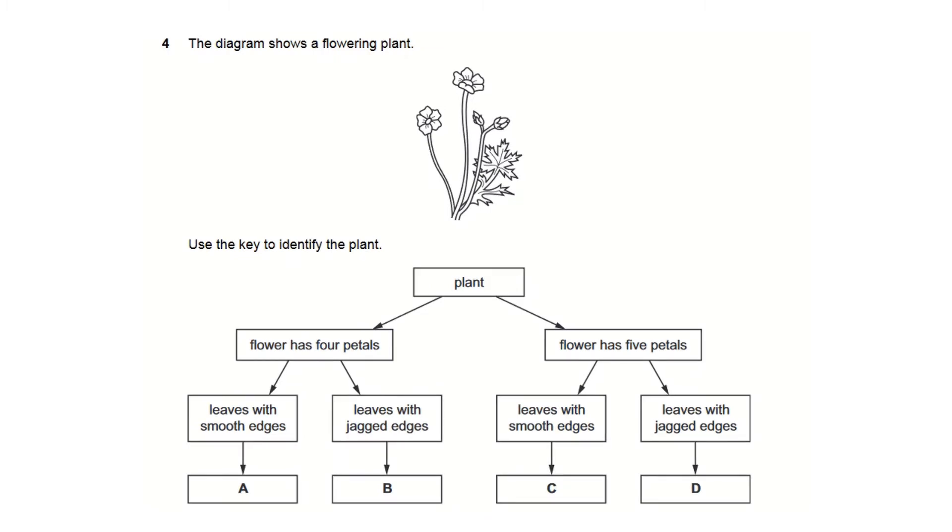Here is another example on how to use a key to identify an organism from the IGCSE Extended Multiple Choice, and this one here is quite nice. We have a flowering plant here and the key to this exercise is remembering what petals are. Petals are the leaves here on the flower.